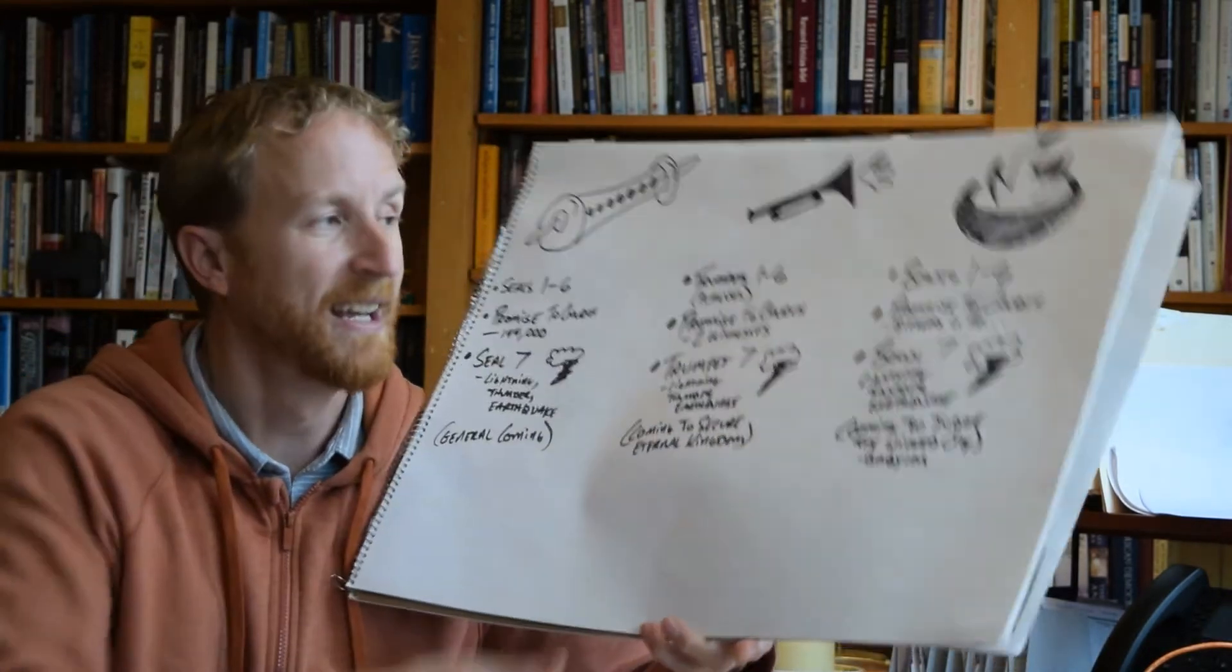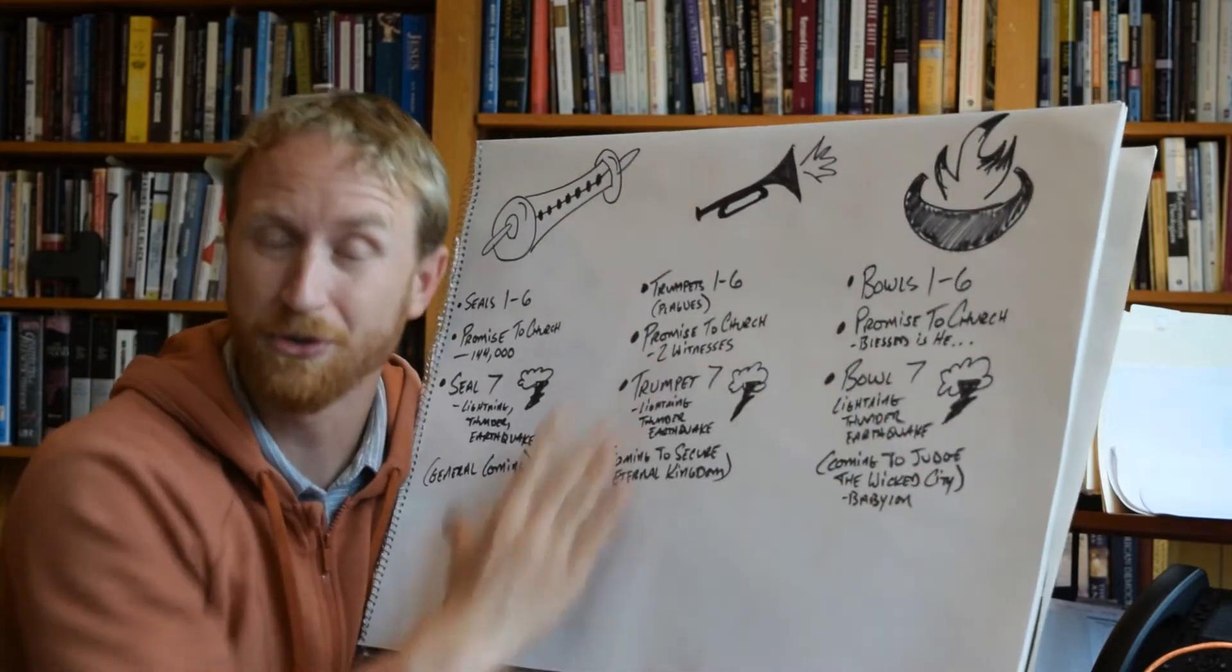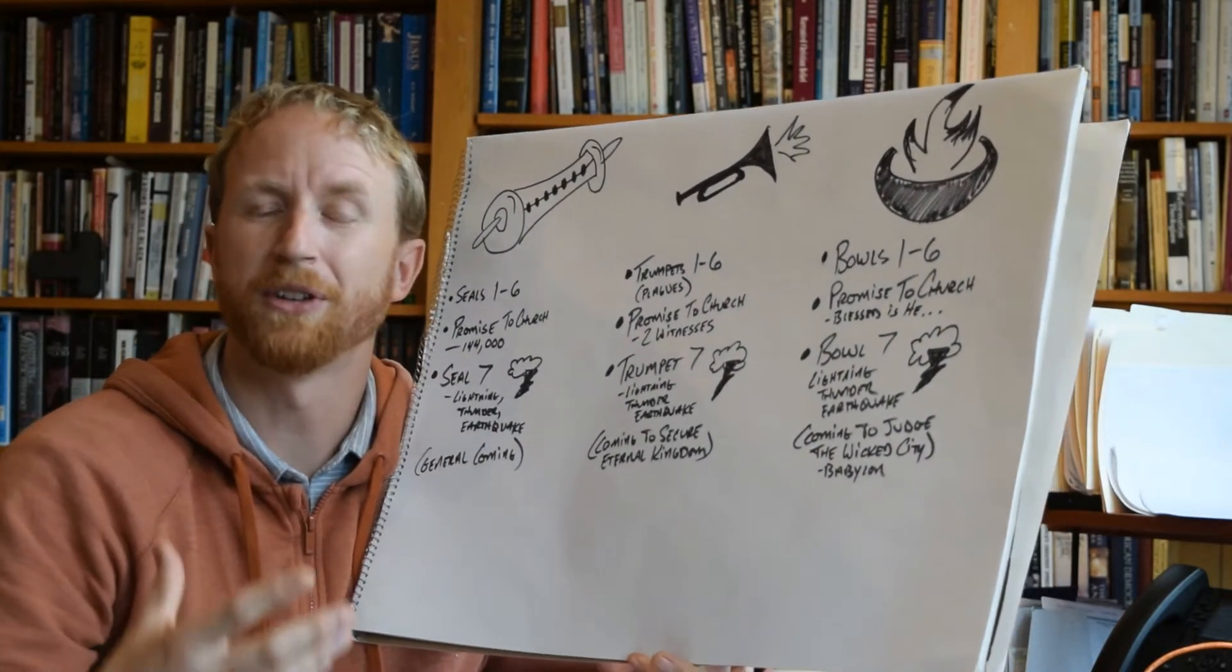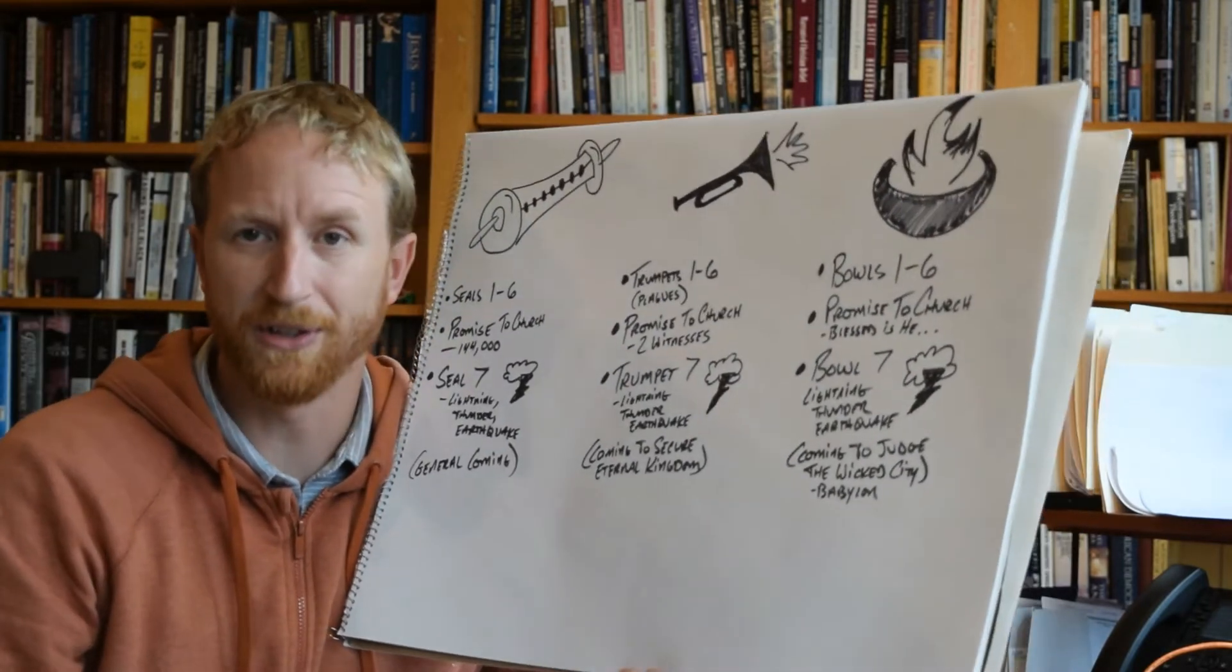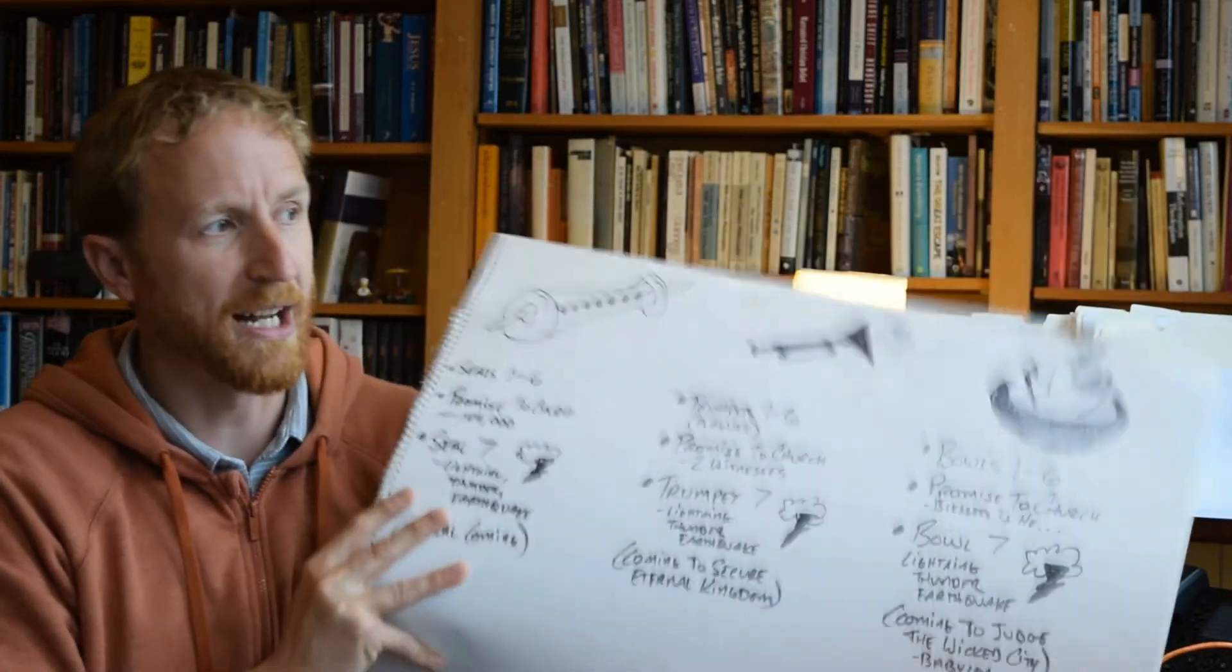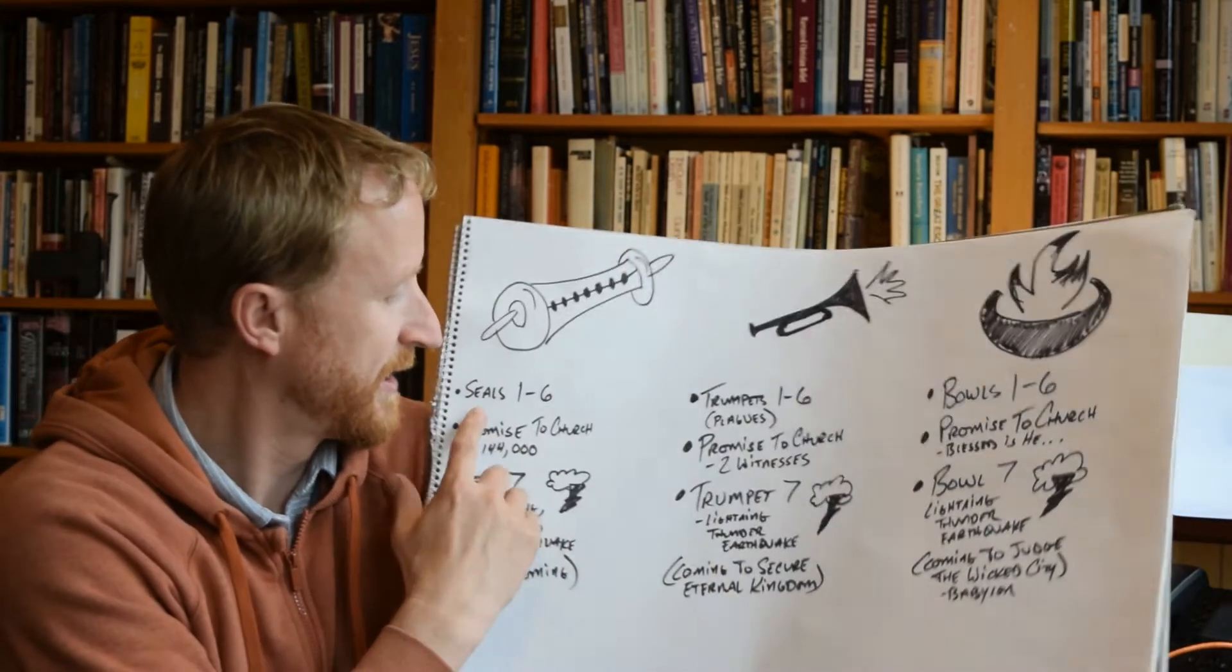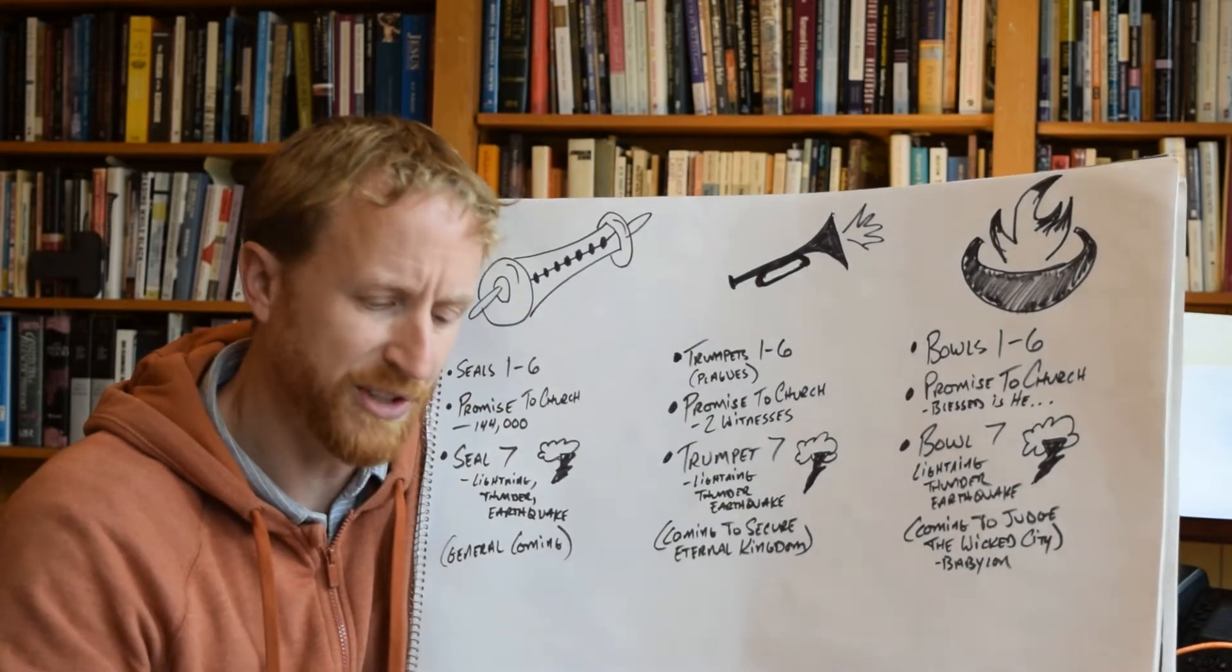So, surprise, surprise, at the end of each of these cycles, which bring us to the end of history in their own unique way, we get flashes of lightning, peals of thunder, earthquake, signs that accompany the arrival of God onto the scene. So, let's look more specifically at how these unfold. We looked at at least seals one through six this past Sunday, and we saw at the end of seal six, the sun and the moon are becoming darkened, the stars are falling out of their places, the earth is shaking.